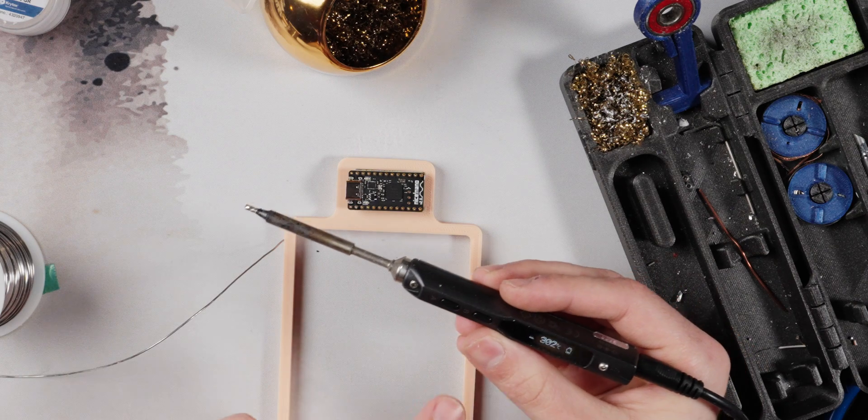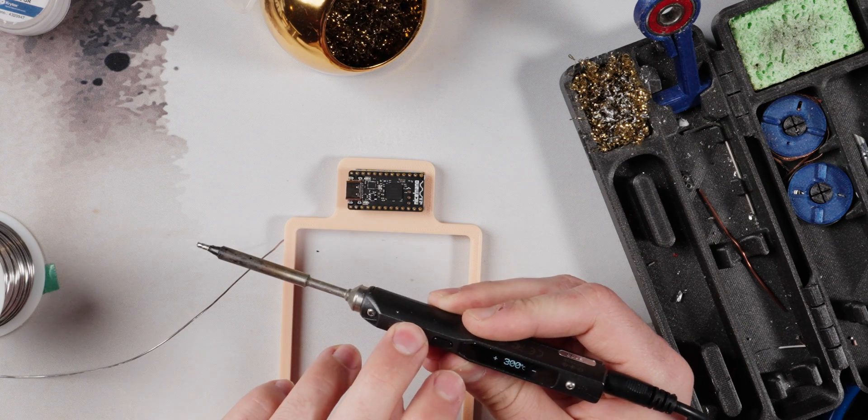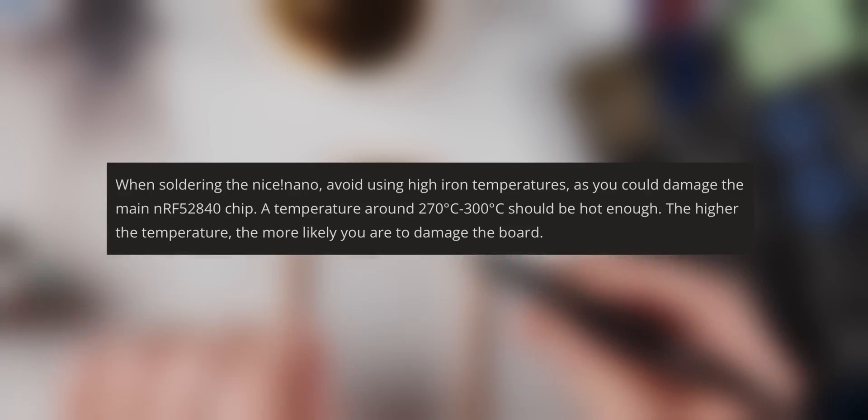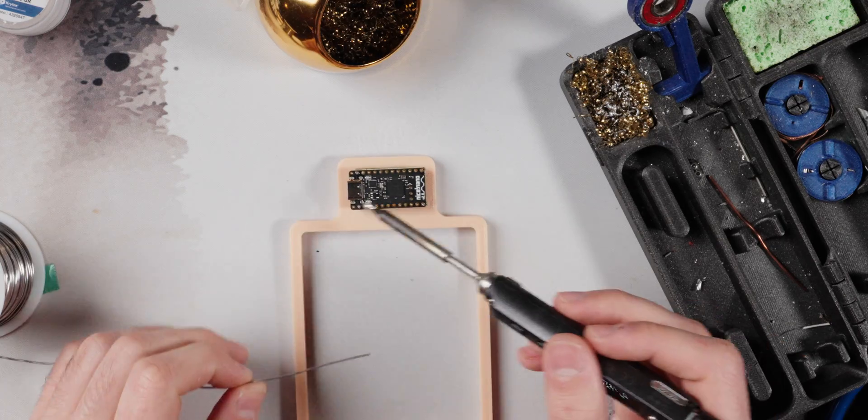When you're working with a Nice Nano, you want to be lower to not damage the chip. I'm going to do this at 270 - seems to be what they recommend. They said I think 270 to 290, so I'm just going to go through and actually solder everything now.